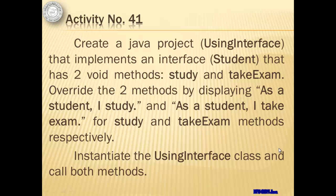Let's look at activity number 41. We will create a Java project called Using Interface that implements an interface called Student that has two void methods, namely study and take exam. We will override the two methods by displaying 'As a student, I study' and 'As a student, I take exam' for the study and take exam methods respectively. At the end, we will instantiate the Using Interface class and call both methods.